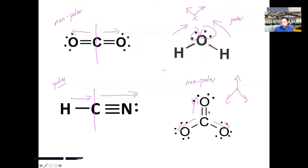To summarize: look for lone pairs on the central atom first — if present, it's polar. Then check symmetry and whether the electronegativity pulls are equal and opposite. If they are, the molecule is nonpolar.